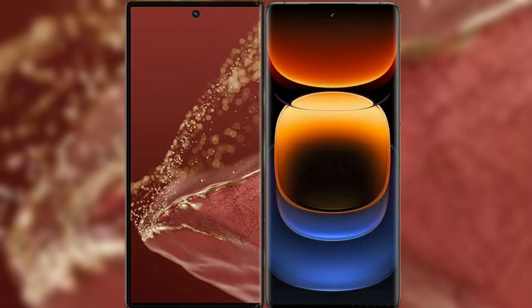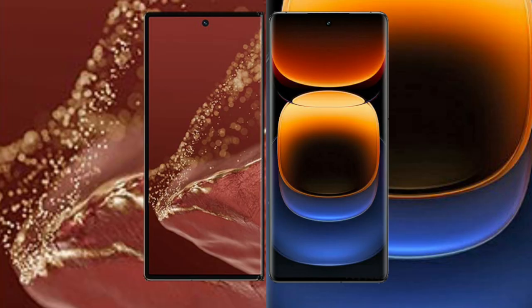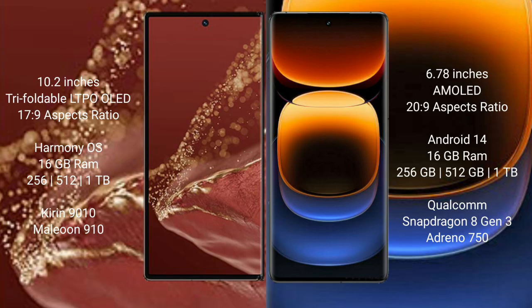I will compare the new Huawei Mate XT Ultimate with Vivo iQOO 12 Pro. Huawei Mate XT Ultimate has a 10.2-inch triple foldable LTPO OLED display with a 17:9 aspect ratio. Vivo iQOO 12 Pro has a 6.78-inch AMOLED display with a 20:9 aspect ratio.